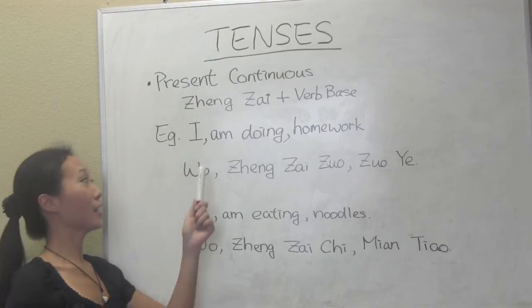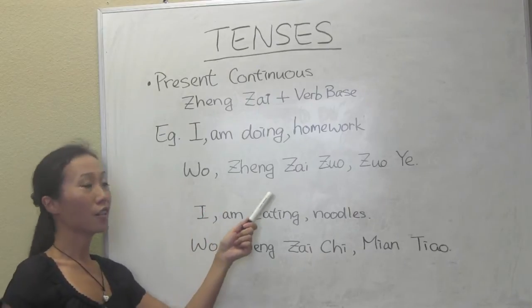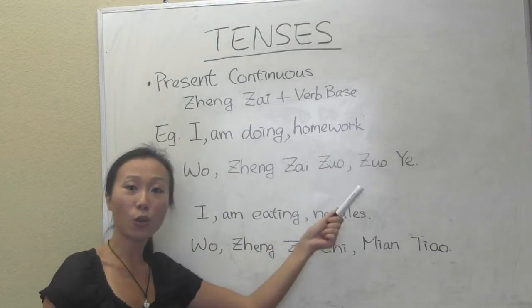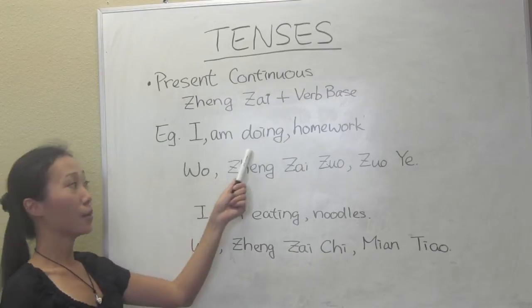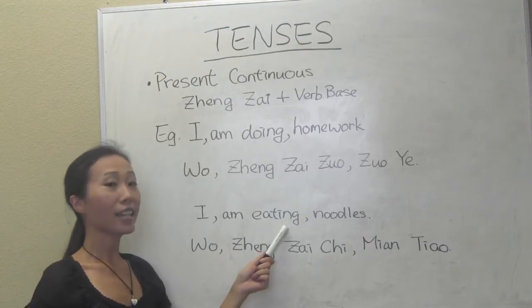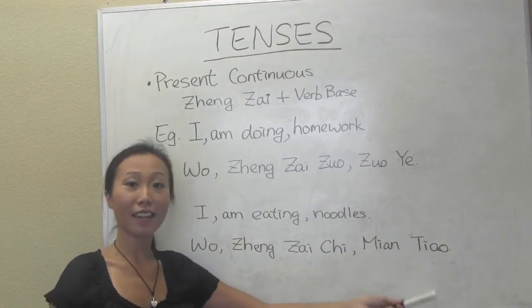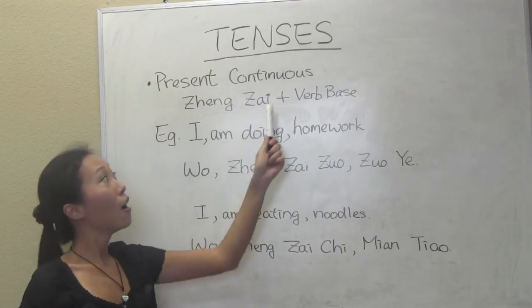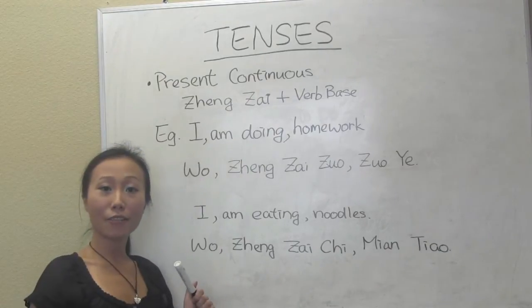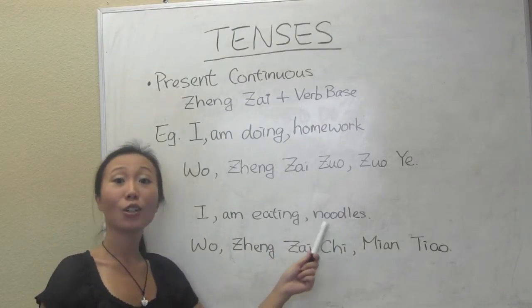Let's see one example: 'I am doing homework' — 我正在做作业. Another example: 'I am eating noodles' — 我正在吃面条. 吃 is the verb base meaning 'to eat,' and 正在 makes it continuous tense. So 我正在吃面条 means 'I am eating noodles.'